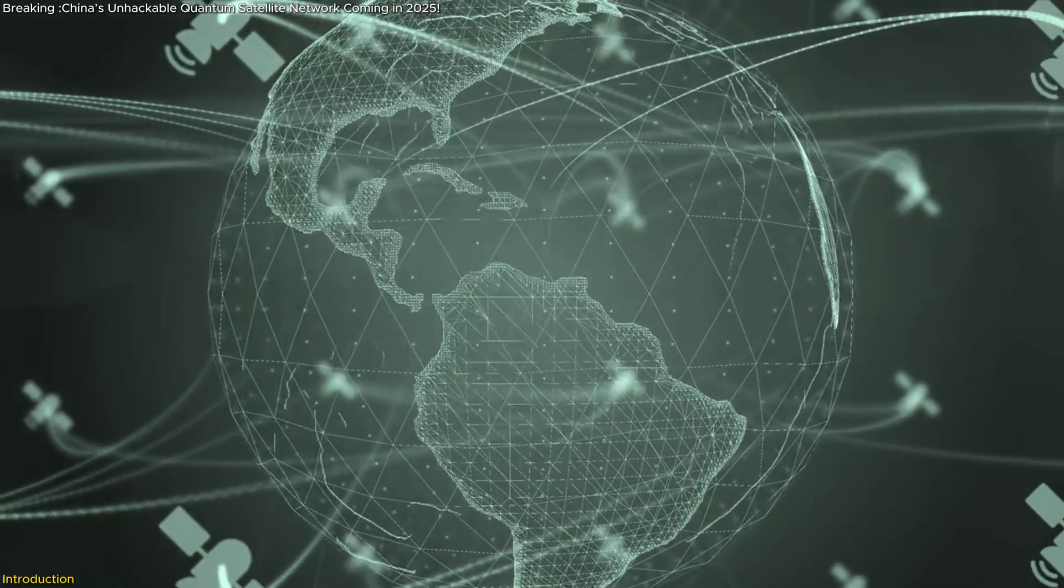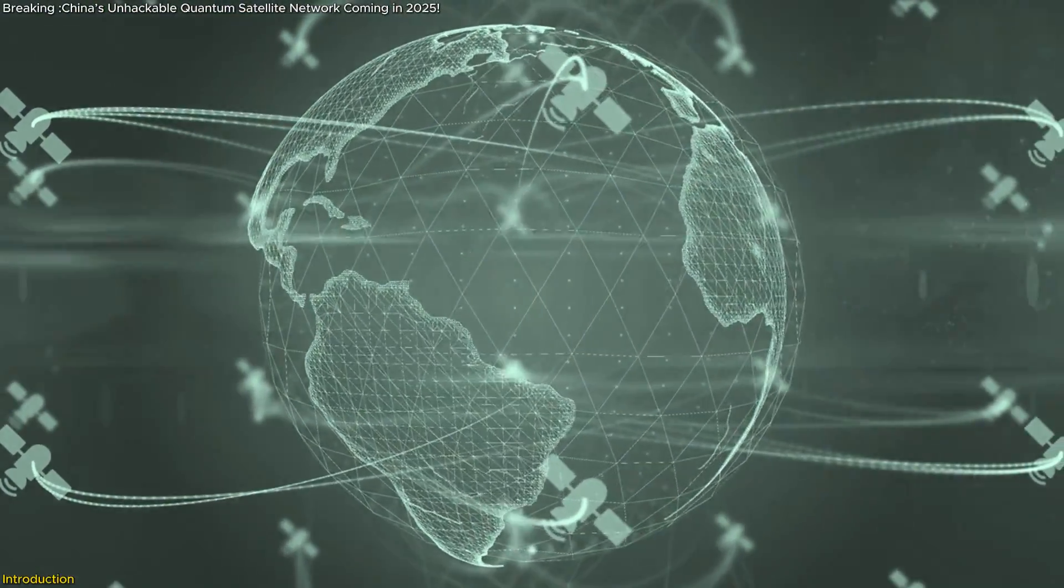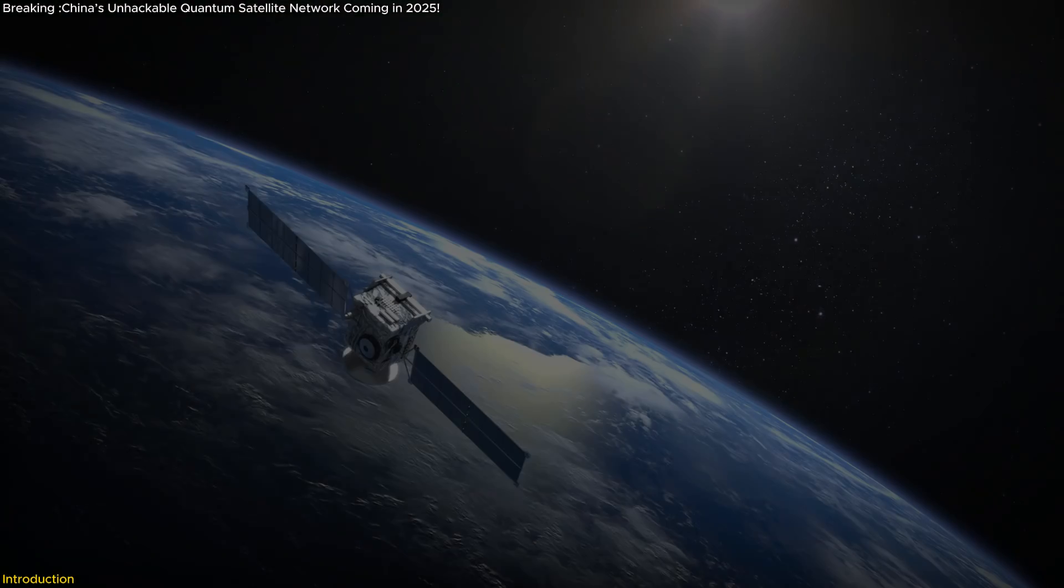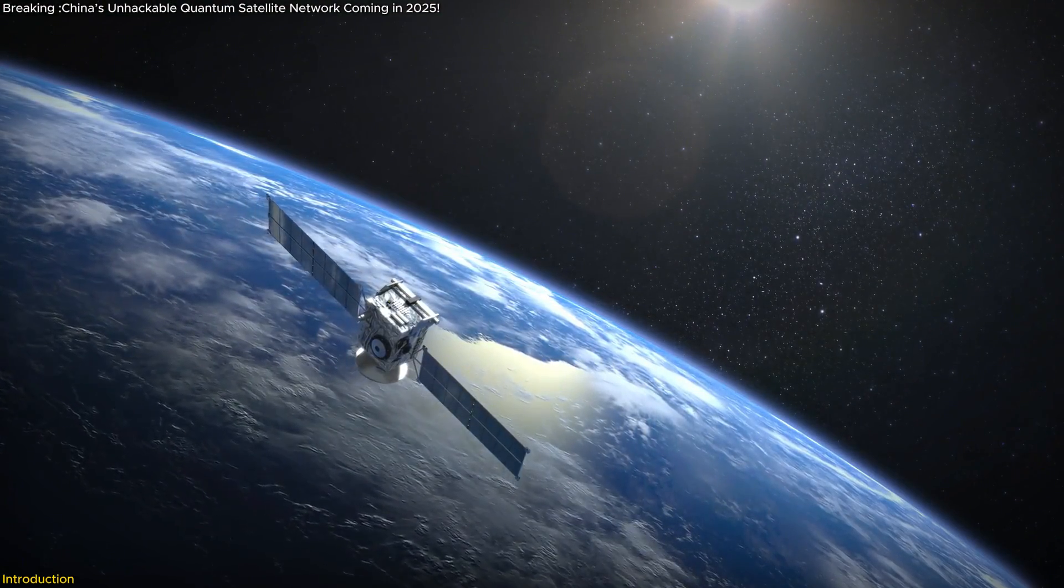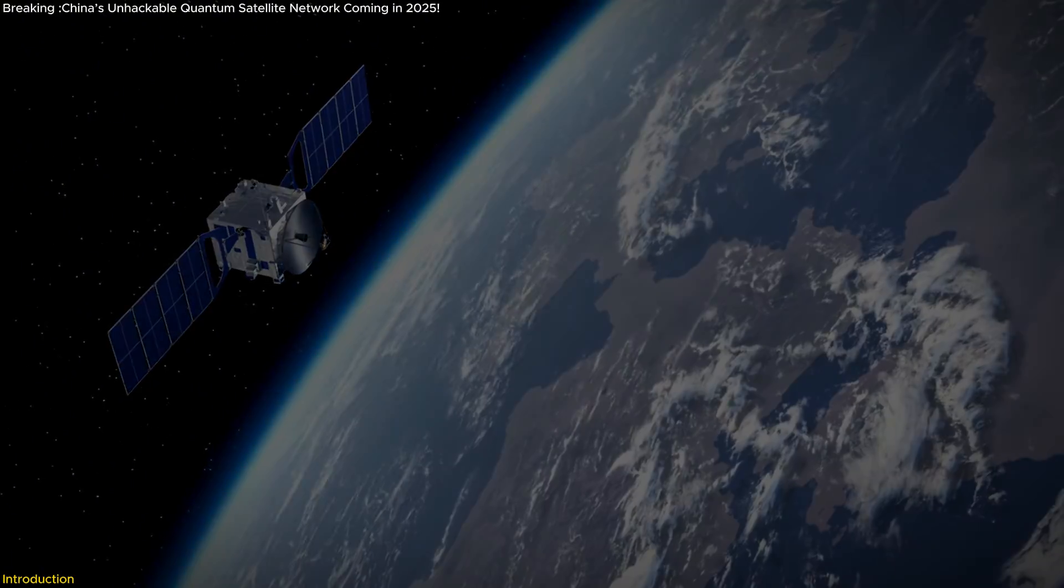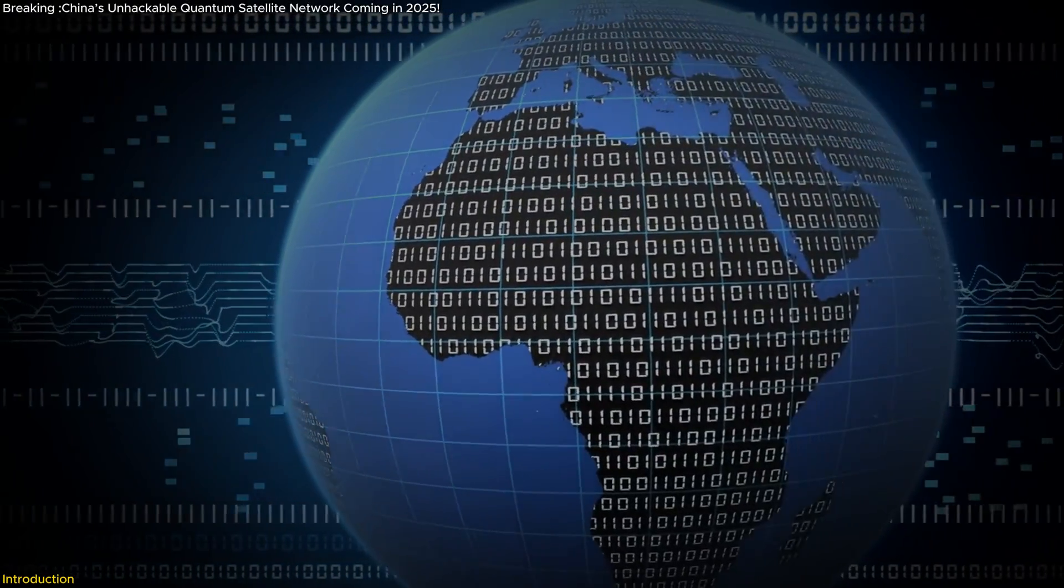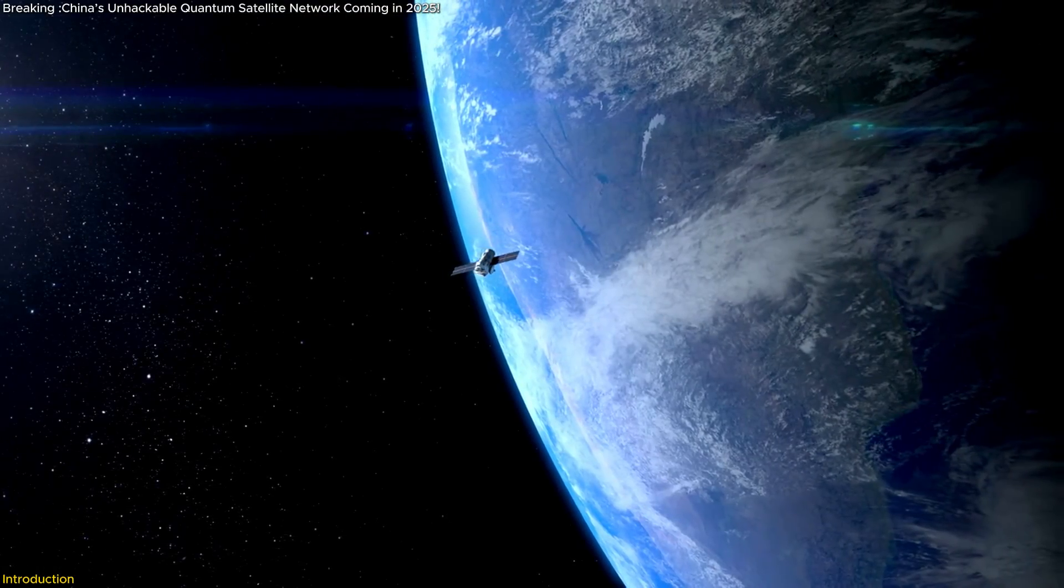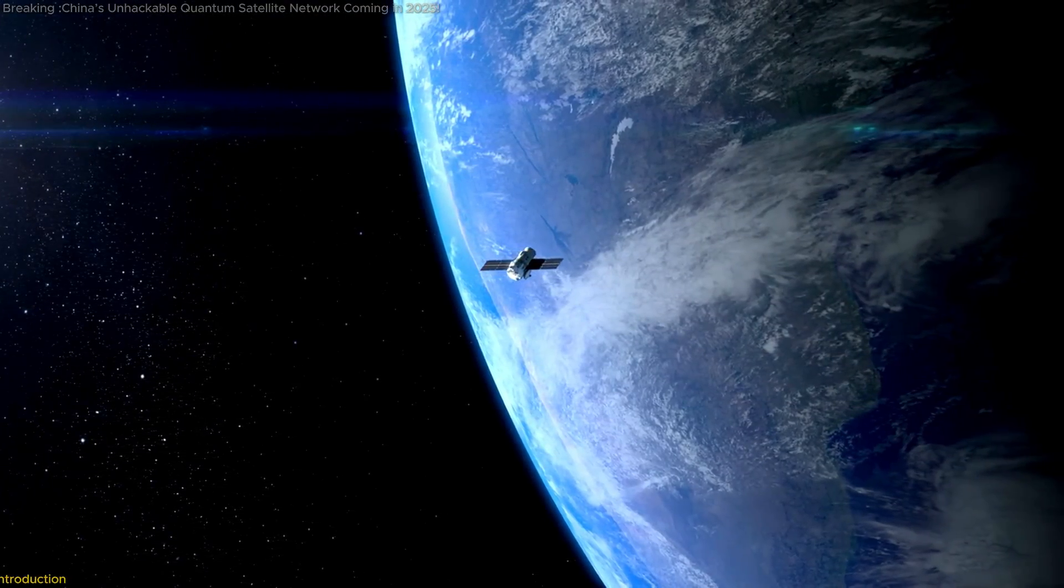China aims to establish an unbreakable digital communication system that could redefine global information security. Using satellites in both low-Earth orbit LEO and medium-Earth orbit MEO, this network promises to achieve a level of encryption that traditional methods can't even begin to match. In this video, we'll uncover the details behind this groundbreaking project.